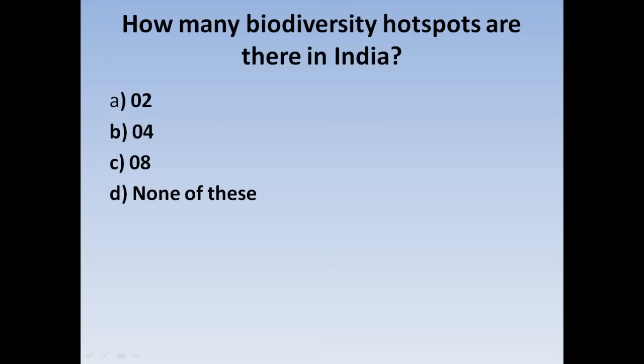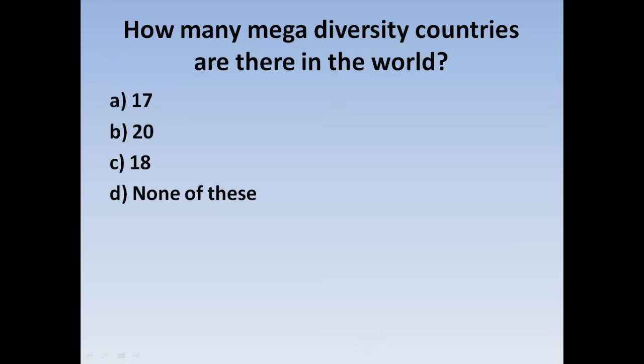How many biodiversity hotspots are there in India? Option A: 2, Option B: 4, Option C: 8, Option D: None of this. Correct answer: 4. There are 4 biodiversity hotspots in India.